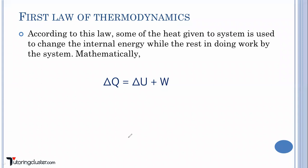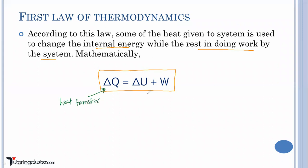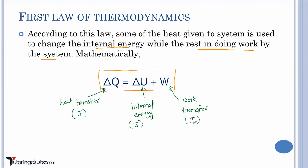Now, the mathematical statement of the first law of thermodynamics: according to this law, some of the heat given to the system is used to change the internal energy while the rest is used for doing work by the system. So: ΔQ = ΔU + W, where ΔQ is the net heat transfer, ΔU is the change in internal energy, and W is the work transfer. Heat, work, and internal energy can be measured in joules or kilojoules.